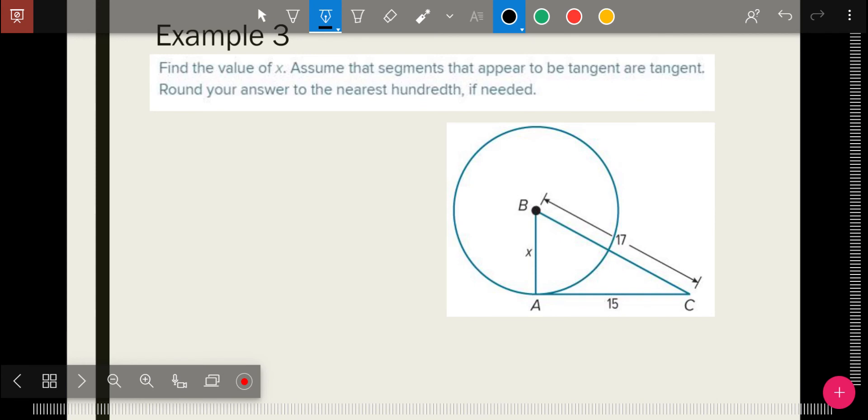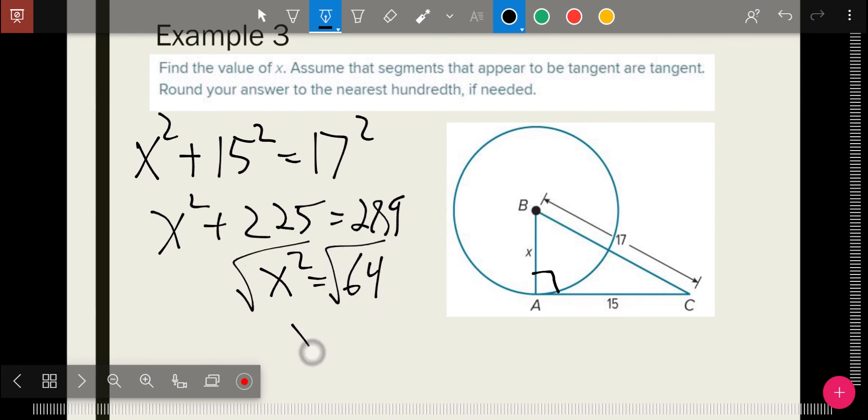Here, I need to find x, and they say right here, assume that any segment that appears to be tangent is, in fact, tangent. Which means that this is, in fact, 90 degrees. And so I do the same kind of math. Now, I have a right triangle now. I minus 225 from both sides. And then I square root to get x by itself. And so I found the value for x.